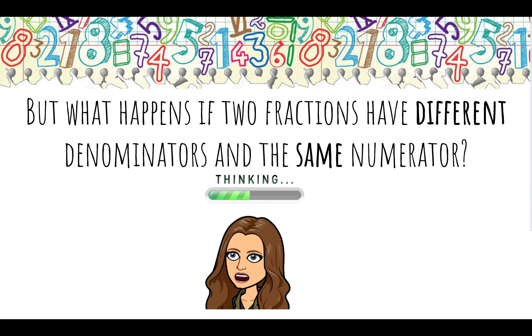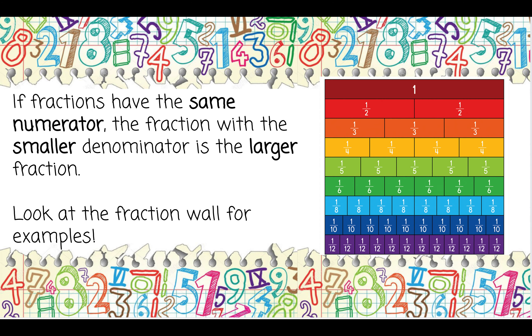So we just looked at examples where all the fractions had the same denominators. But what happens if the two fractions have different denominators and the same numerator? If fractions have the same numerator, the fraction with the smaller denominator is actually the larger fraction.